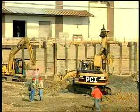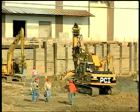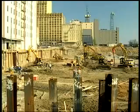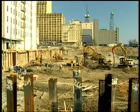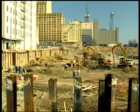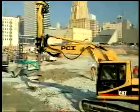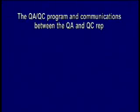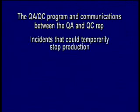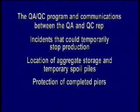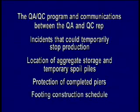A pre-GeoPeer construction conference should be held when the GeoPeer installer arrives at the site. The meeting should include the general contractor, the geotechnical firm of record with their quality assurance representative, and the licensed GeoPeer installer including his quality control representative. Subjects that should be discussed include the QA-QC program and communications between the QA rep and the QC rep, incidents that may occur that could temporarily stop production, location of aggregate storage and location of temporary spoil piles, protection of completed piers, and footing construction schedule.